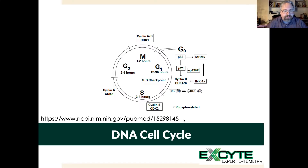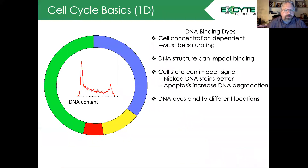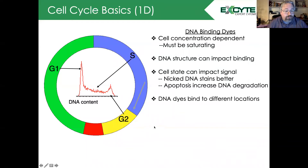Hello and welcome to today's teaching point where we'll be talking about the DNA cell cycle analysis. Let's briefly review how the cell cycle works. Cells start in a G1 phase or a resting phase. After some signal they move into a synthesis phase where they're synthesizing their DNA to reach double the DNA concentration, ending up in the G2 or GAP2 phase. They wait until another signal drives them through mitosis and cell division, then back into G1. We can analyze this using DNA binding dyes and generate histograms for cell cycle analysis.